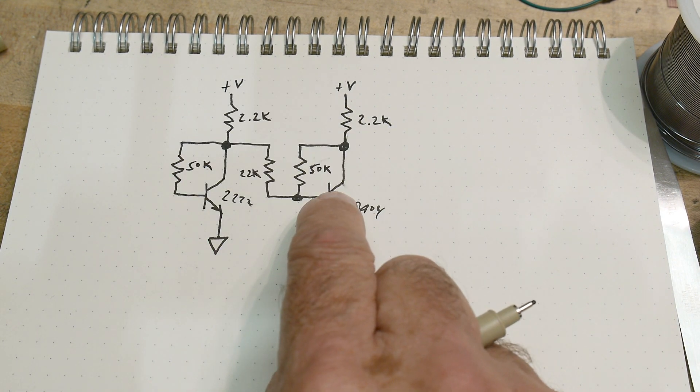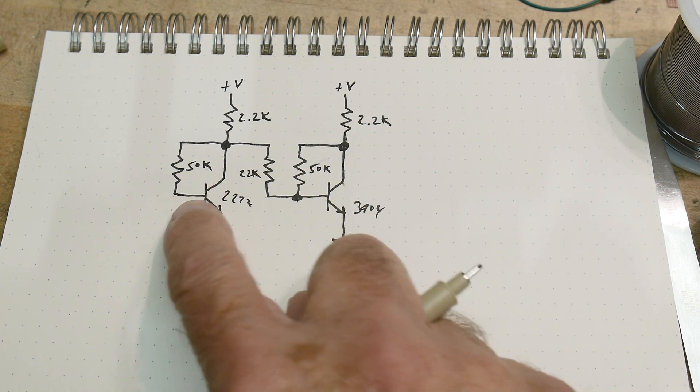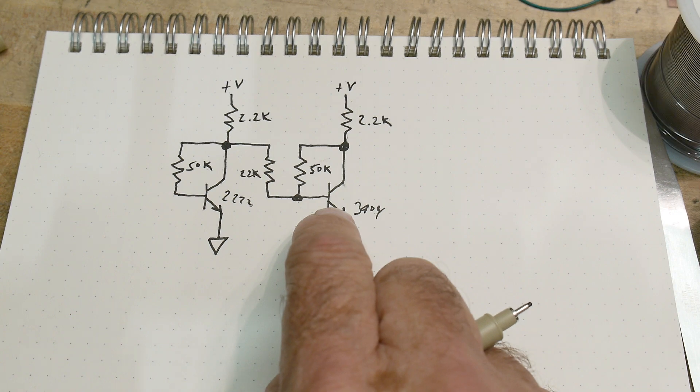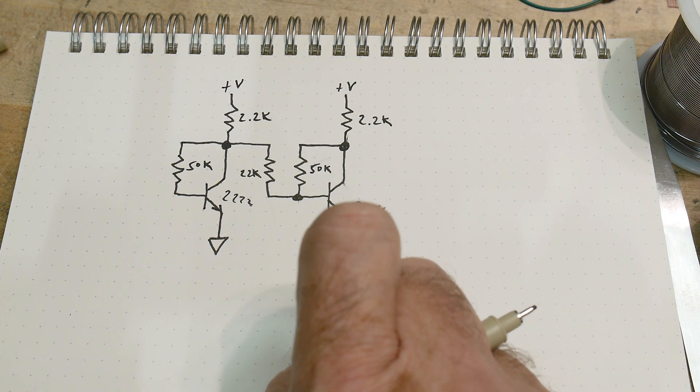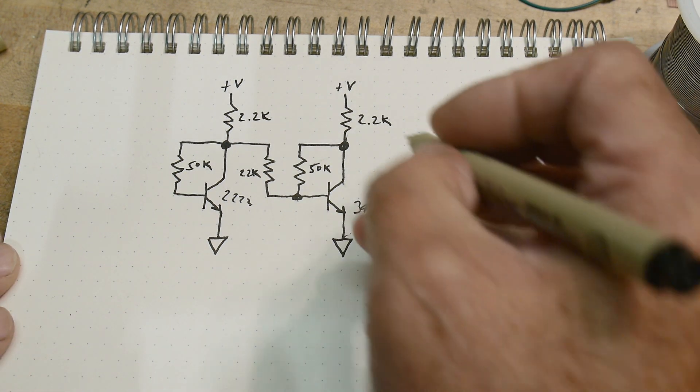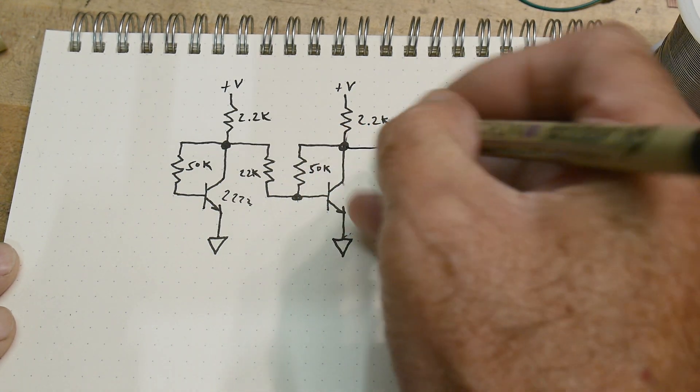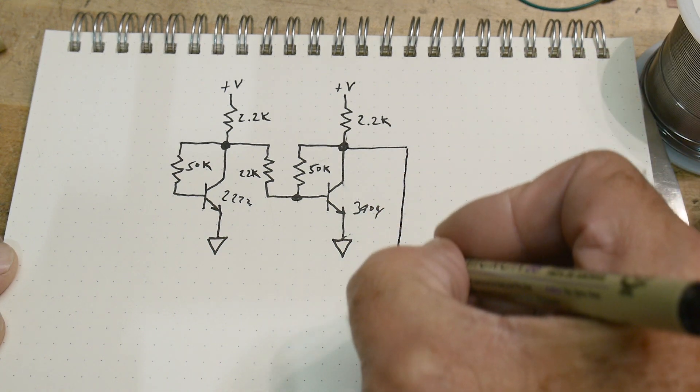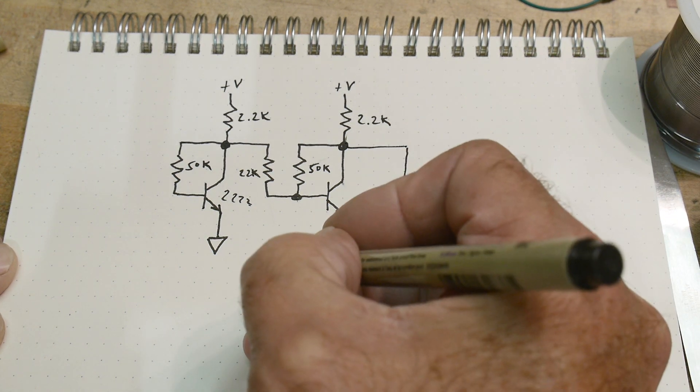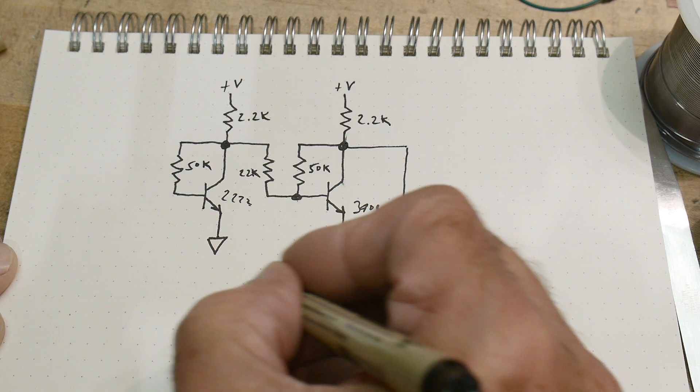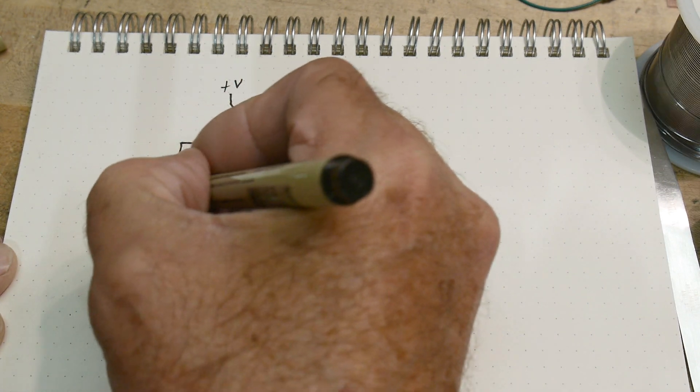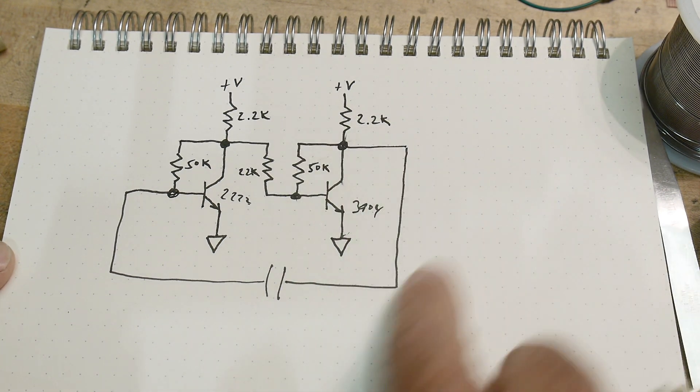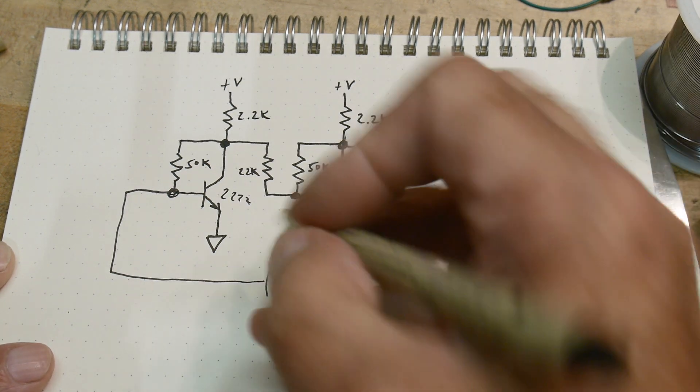And if this transistor magically was off, then this one would turn on. So what this circuit does is it brings the output, this would probably be an output, and it's going to bring it over here. So we're going to have a feedback here with a capacitor.